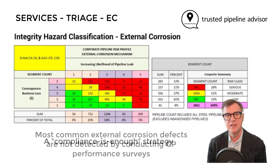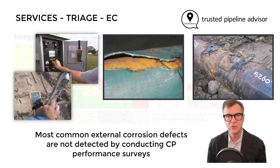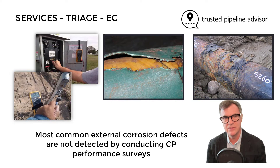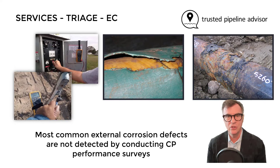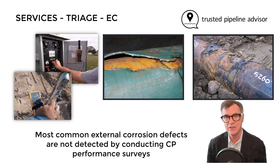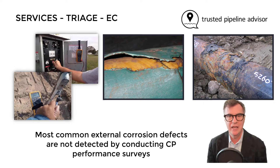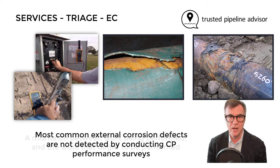The reality is that nearly all external corrosion failures initiate at a location of external girth weld or pipeline coating damage, and these defects are not able to be detected during a traditional annual CP system performance audit.